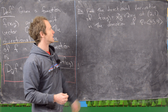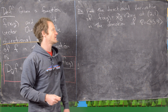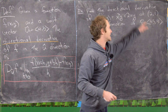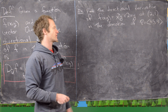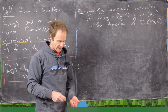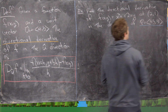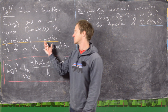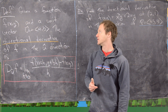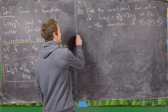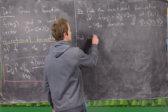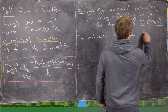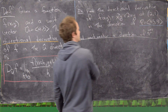The example: find the directional derivative of f(x,y) = x²y + 2xy at the point (2, 1) in the direction of v = (-3, 4). The first thing to notice is that v is not a unit vector, and the directional derivative is only defined for a unit vector, so we need to find a unit vector in the direction of v.